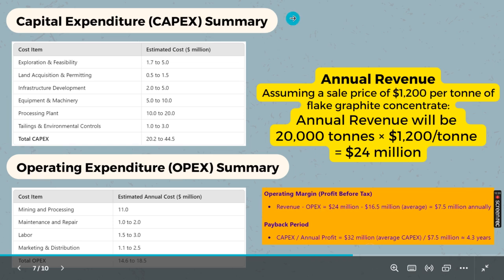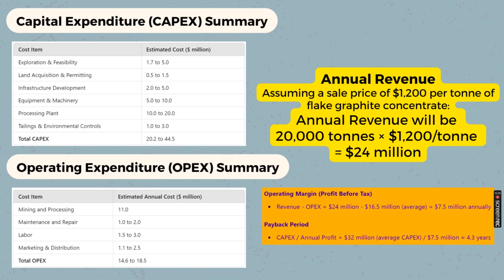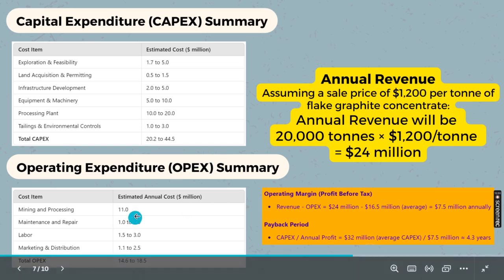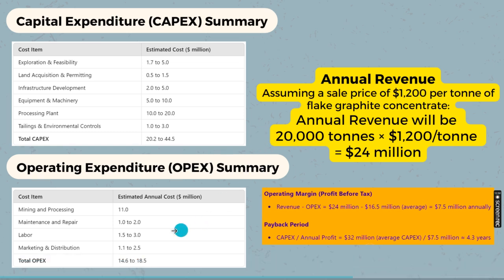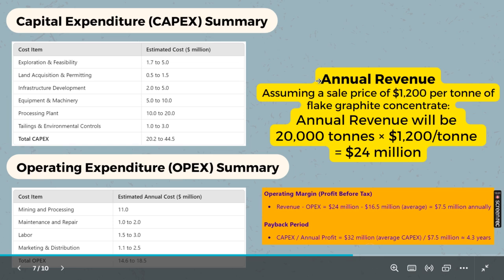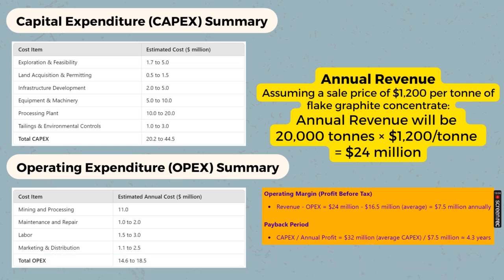At a glance, the total capital expenditure at the beginning will be 20 to 44 million dollars depending upon circumstances — at minimum 20 million and at maximum approximately 45 million dollars. The total operational expenditure summarized is 14.6 to 18.5 million dollars, but that operational expenditure is not all at once — it is spread over 20 years, with that amount spent gradually each year.